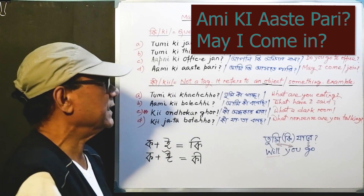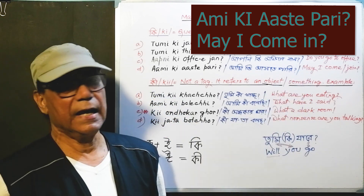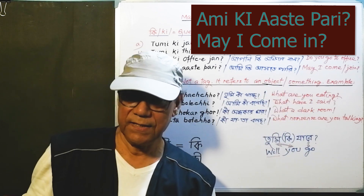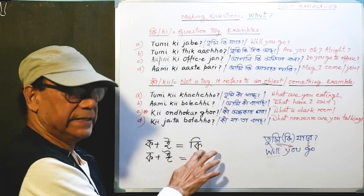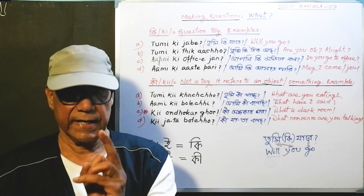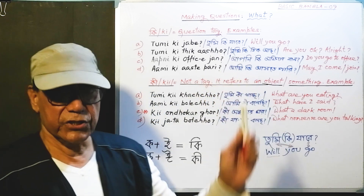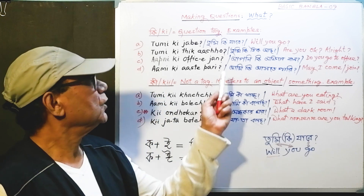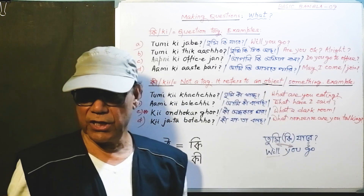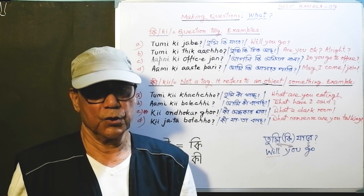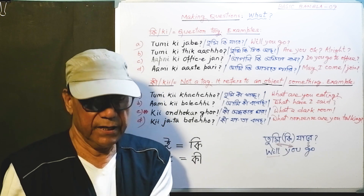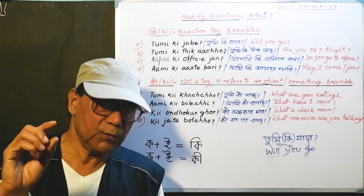We have used the unstressed ki as a question tag to form these questions. Once again, listen and try to remember: 'tumi ki jabe' — will you go? 'Tumi ki thik acho?' — are you okay, are you alright? 'Apne ki office jaan?' — do you go to office? 'Ami ki aste pari?' — may I come, may I come in? I think you have some idea, and that will help you later.